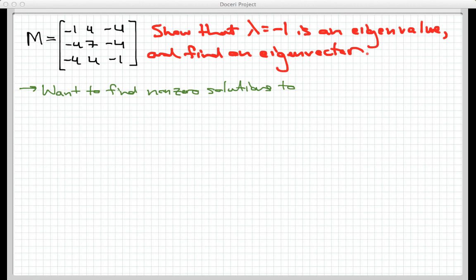So the way we work this is we look at M, and we want to find non-zero solutions to the equation M⃗x equals lambda ⃗x. Lambda is negative 1 this time, so we're looking for non-zero solutions to that equation.